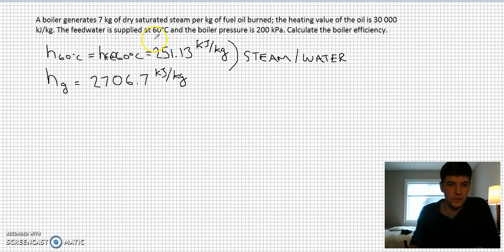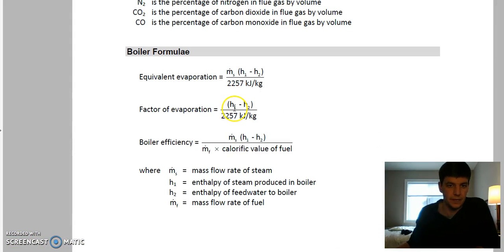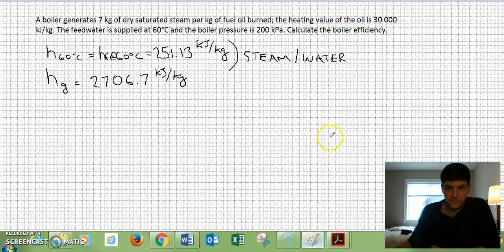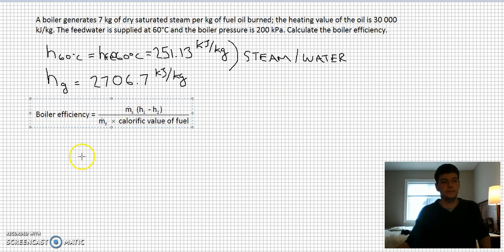I have a fuel side and everything I need is given. Your equation is in your academic supplement and textbook. Here it is in the academic supplement: boiler efficiency is the mass flow of steam times the change in enthalpy of steam and feedwater divided by the mass flow of fuel times the calorific value of fuel. Let me put this on the screen so we can remember it.